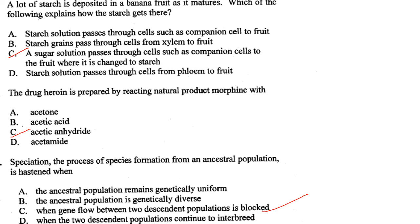The drug heroin is prepared by reacting the natural product morphine with acetic anhydride. Answer is option C.